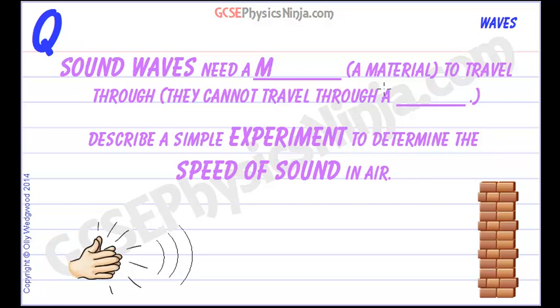Sound waves are caused by the vibrations of particles, and those vibrations move through a substance as each particle bumps into a neighbour and passes on its energy. So sound waves need what's called a medium — a strange physics term which means a substance or material to travel through. Sound waves can travel through gases such as air, but they can also travel through liquids and solids.